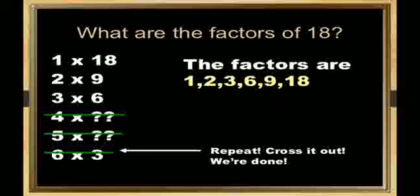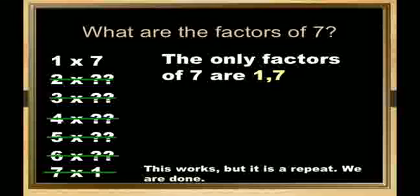What are the factors of 7? 1 times 7. The only factors of 7 are 1, 7. Because if we write 1, 2, 3, 4, 5, 6, and 7, and we do the same process, we get the repeat number at 7 times 1, and all in-between numbers we didn't get 7, so 7 is having only 2 factors, that is 1 and 7.